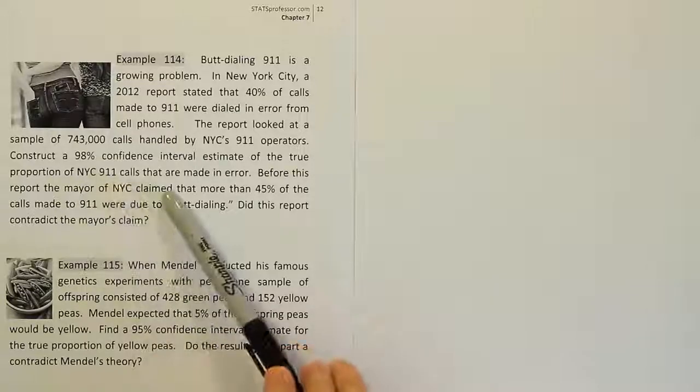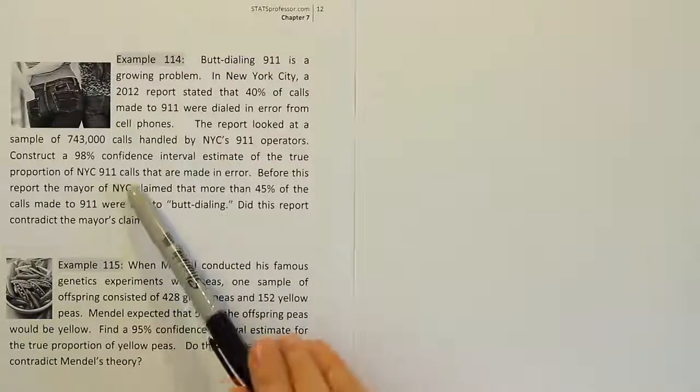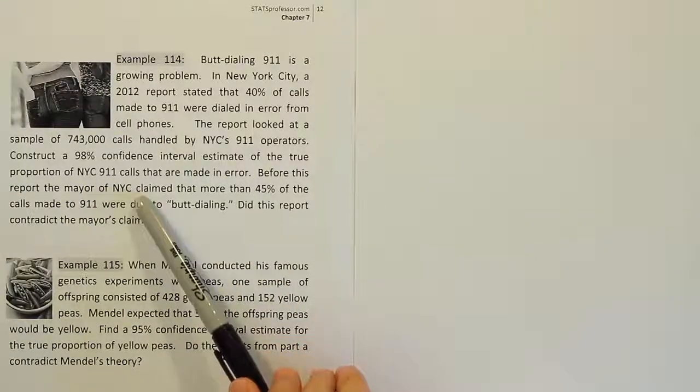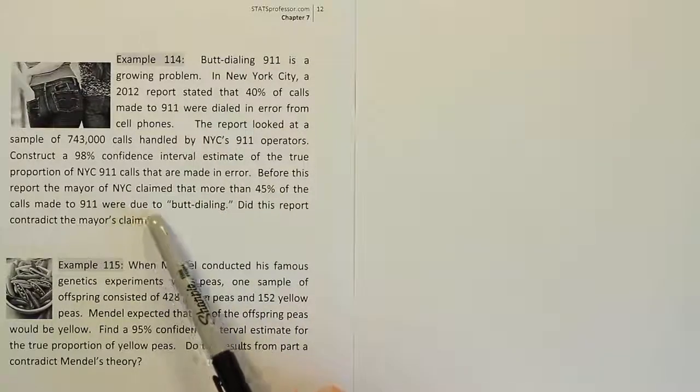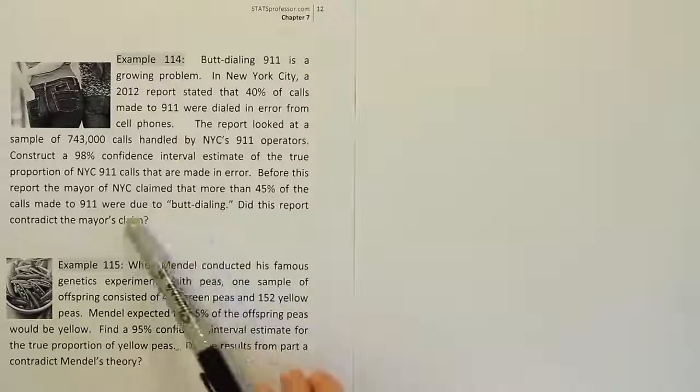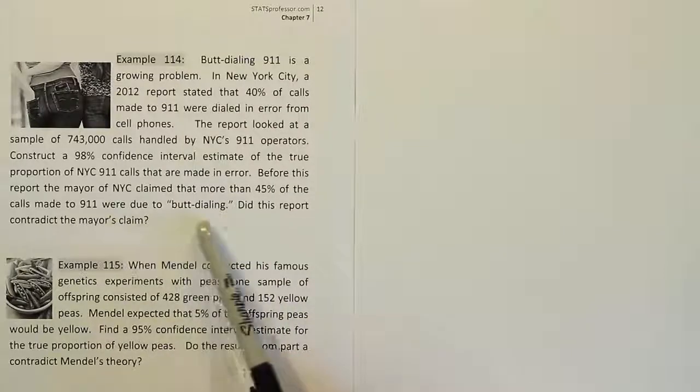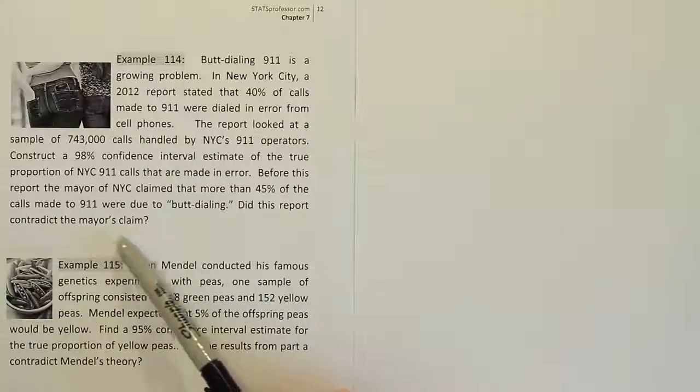It constructed a 98% confidence interval estimate of the true proportion of NYC 911 calls that are made in error. Before this report, the mayor of New York City claimed that more than 45% of the calls made to 911 were due to butt dialing. Did this report contradict the mayor's claim?